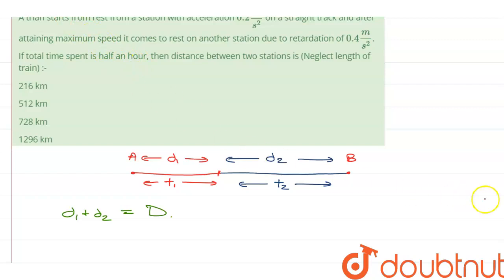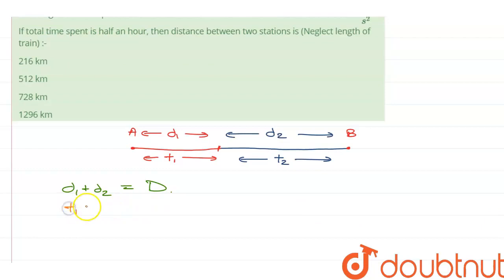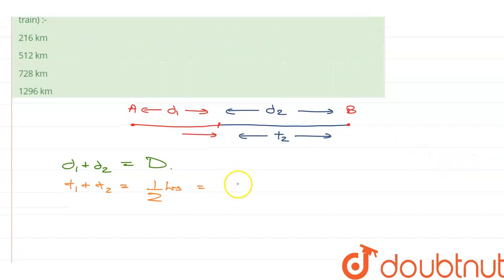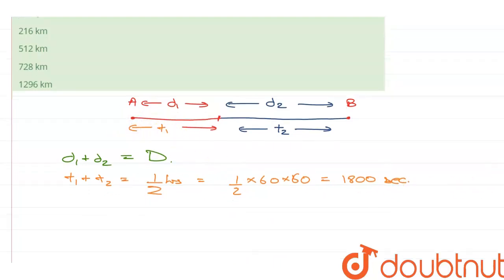So, that means T1 plus T2 is equal to 1 by 2 hours which is equal to, since the acceleration is in meter per second square, let's convert this into seconds. So, T1 plus T2 is equal to 1 by 2 into 60 into 60, meaning 1800 seconds. This is T1.